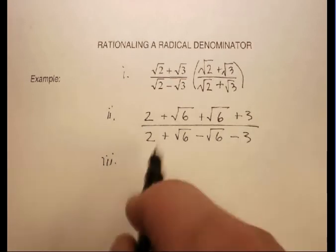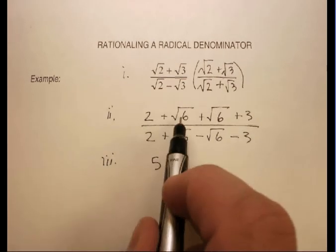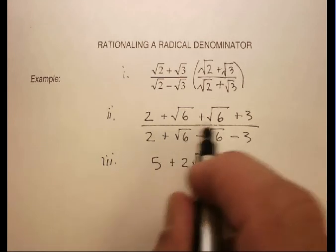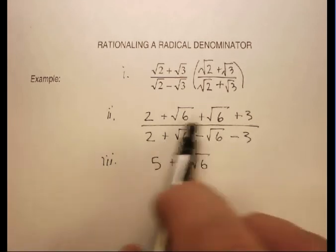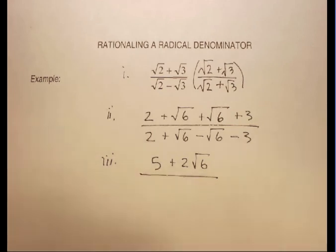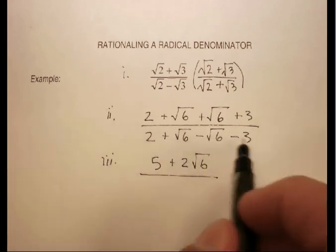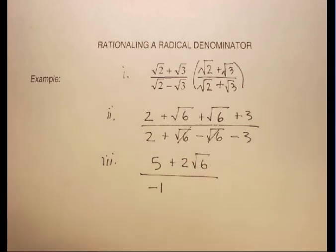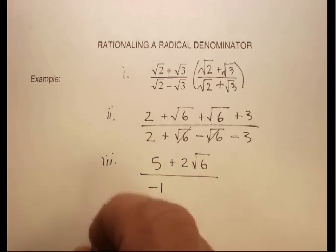2 plus 3 is 5, and radical 6 plus radical 6 is plus 2 radical 6. It's not radical 12. Make sure you understand the difference between adding and multiplying radicals. In the denominator, I get 2 minus 3 is minus 1, and then these cancel out. There we go. That's simplified pretty nicely.